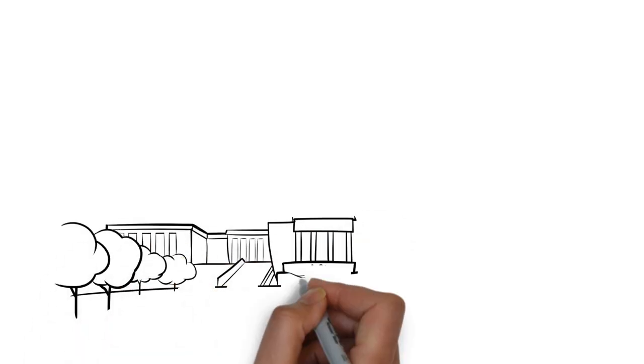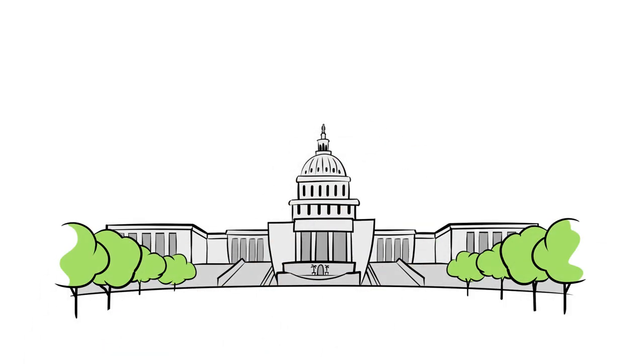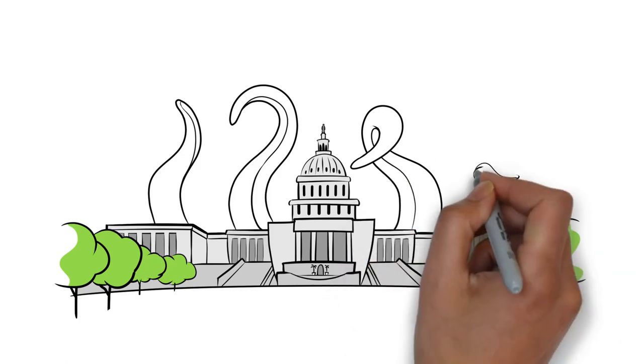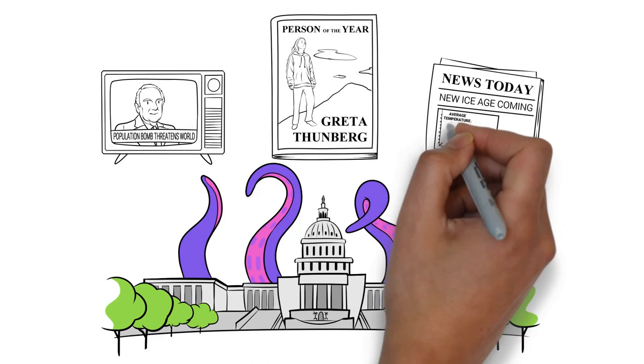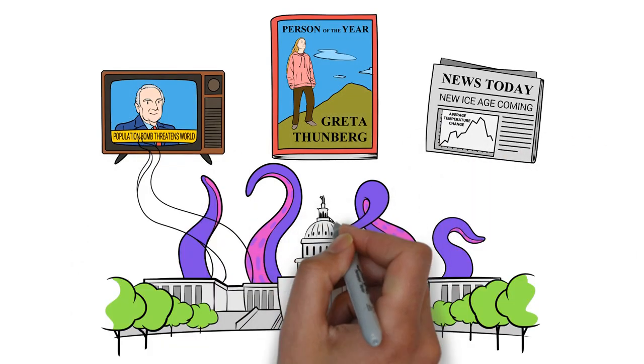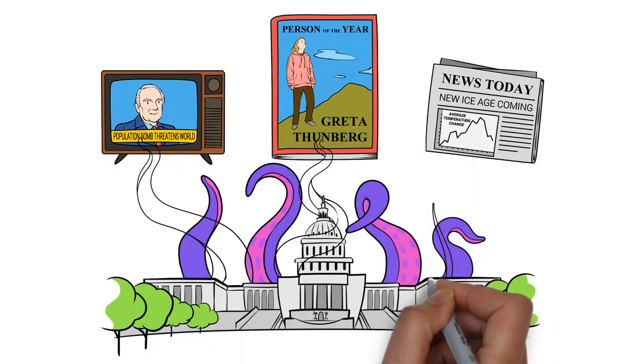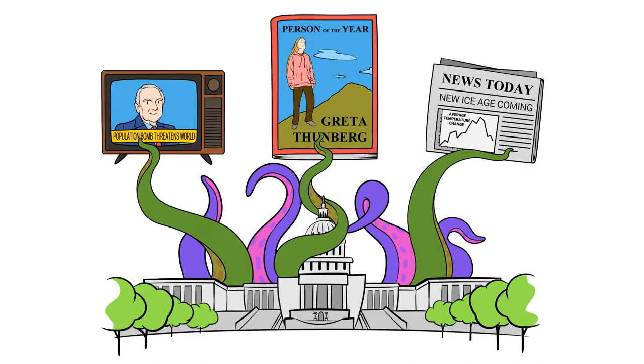The unfortunate reality is that predictions of environmental doom are useful for those that desire power. The greater the threat, the more power is needed. As history has shown, the government grows in times of crisis, and rarely ever shrinks once the emergency has passed.